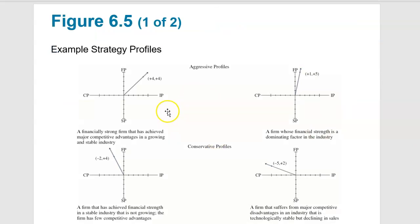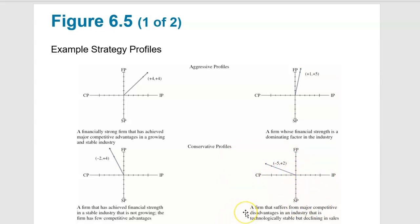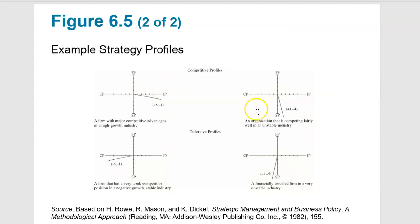Here are example profiles from the SPACE matrix. When the X and Y scores are plotted, they create a directional slope indicating what quadrant strategies to pursue. A conservative profile might suit a firm suffering major competitive disadvantages in a stable but declining industry. A more aggressive approach suits a stronger company in a growing, stable industry. A financially troubled firm in a very unstable industry would have a more defensive position. The example shown plots financial, internal, and industry positions, resulting in scores indicating the company should compete in a more aggressive tone.